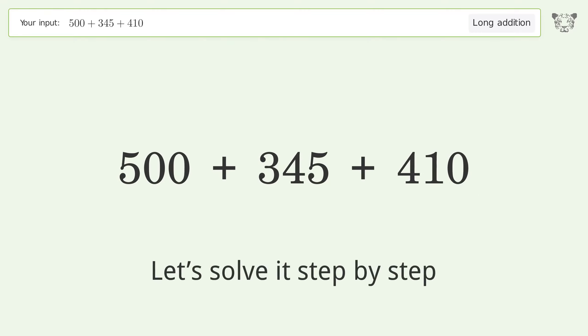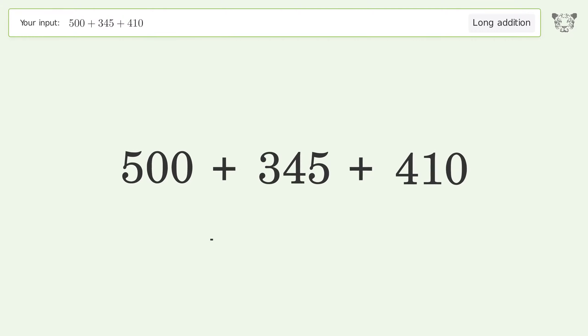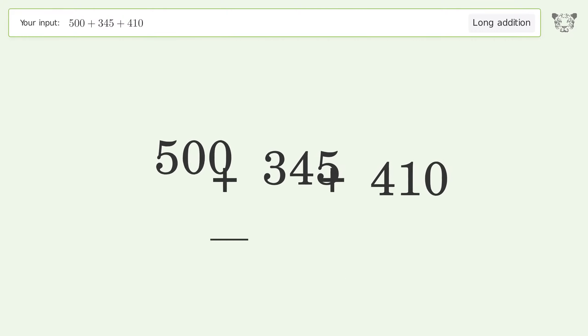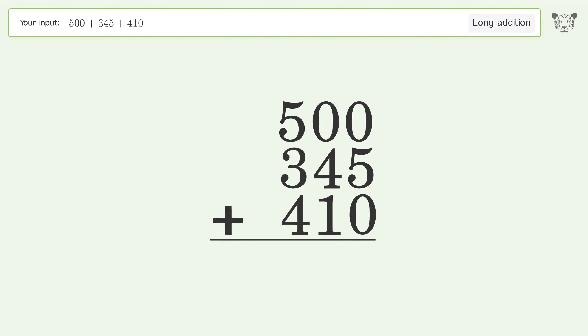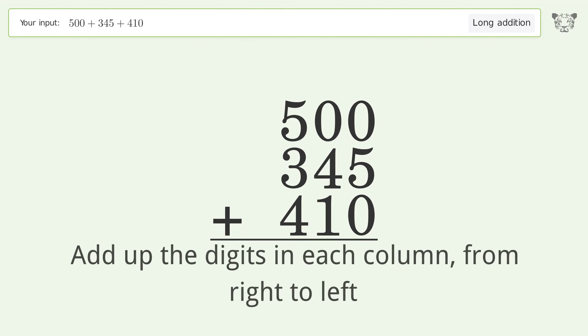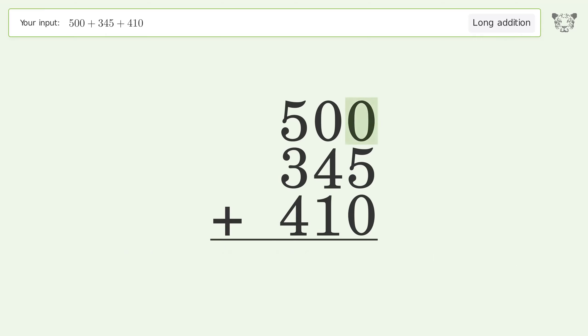Let's solve it step by step. Rewrite the numbers from top to bottom, aligned by their place values. Add up the digits in each column from right to left. In the ones column: 0 plus 5 plus 0 equals 5.